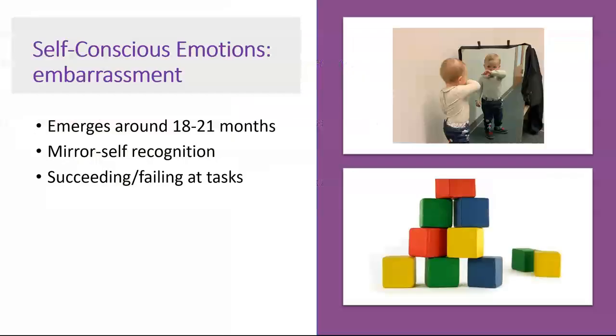Embarrassment is the first secondary or self-conscious emotion to be evident in development. Around 18 to 21 months, babies will begin to display key features of embarrassment, such as gaze aversion, blushing, and coy smiles, when they fail at a task in front of someone or look at themselves in the mirror.